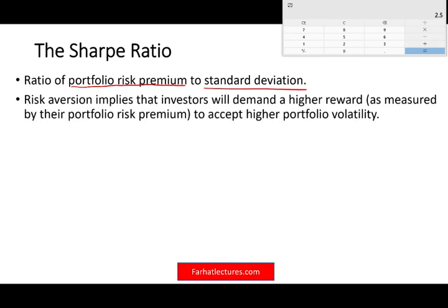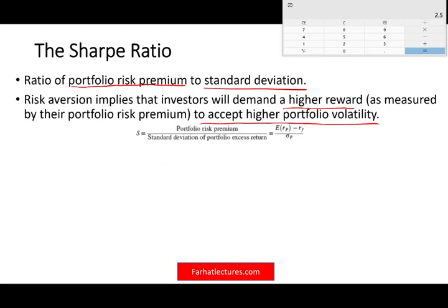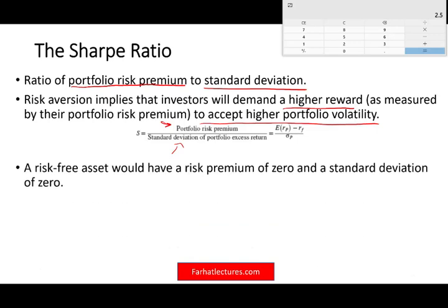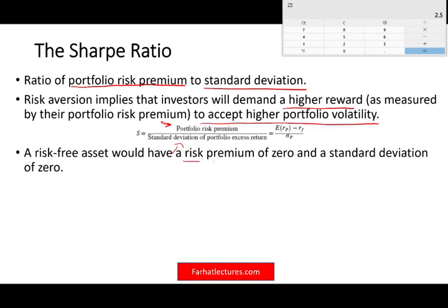If we have a portfolio risk premium, we can divide this by the standard deviation of the portfolio's excess return — rather than the variance, we divide it by the standard deviation. A risk-free asset will have zero premium and a zero standard deviation, because when we're dealing with risk-free assets they have no deviation and no risk premium.